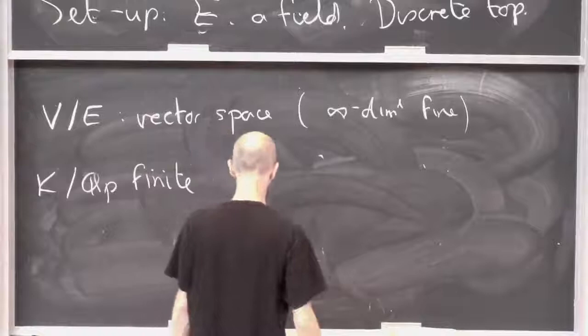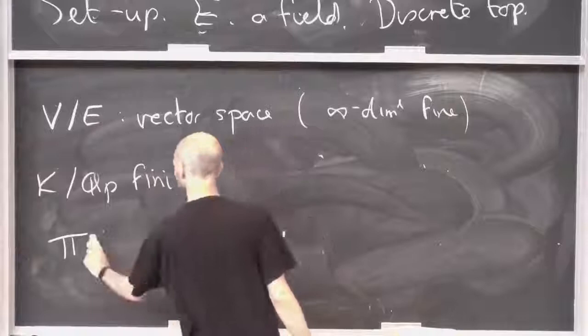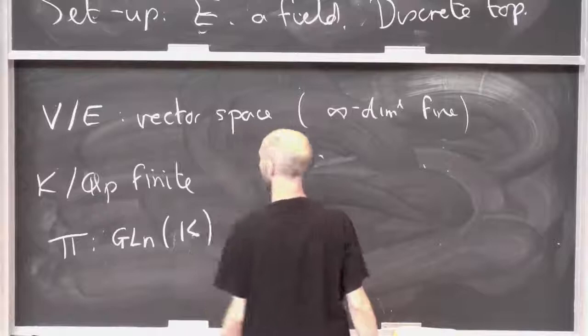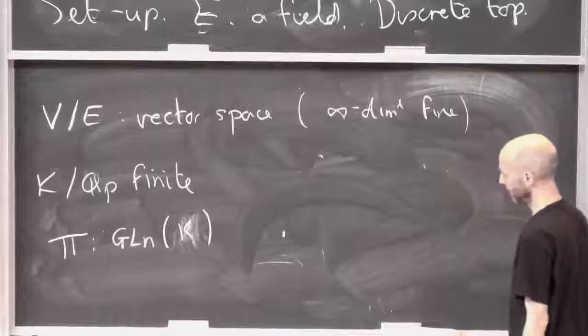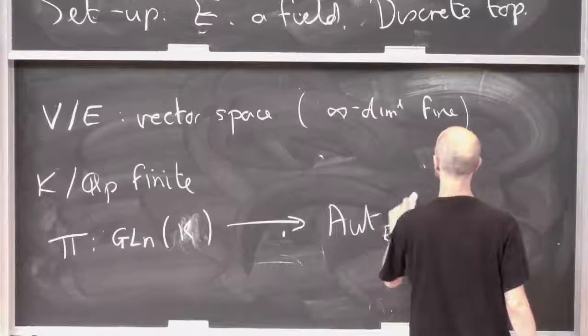So I don't need to worry about continuous maps. So pi, pi from GLN of K. So we're doing representations of this group now here, of GLN of K. So that's normally the target of a representation. But today it's going to be the source. So it's going to go to the E automorphisms of V. A group homomorphism.